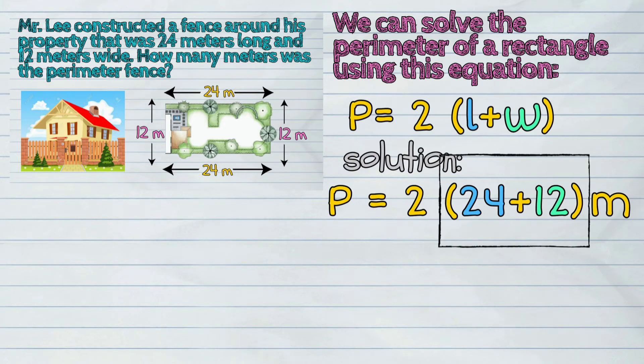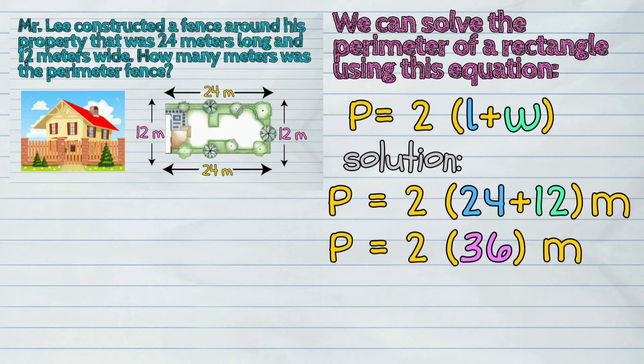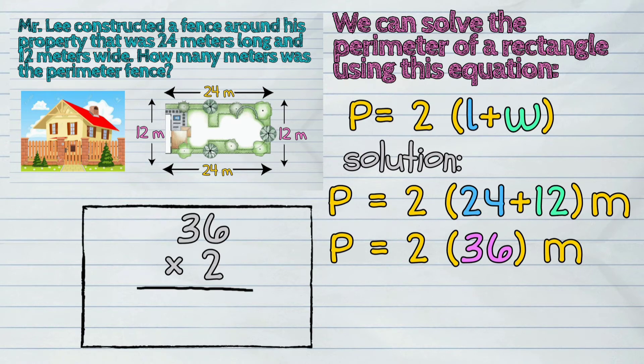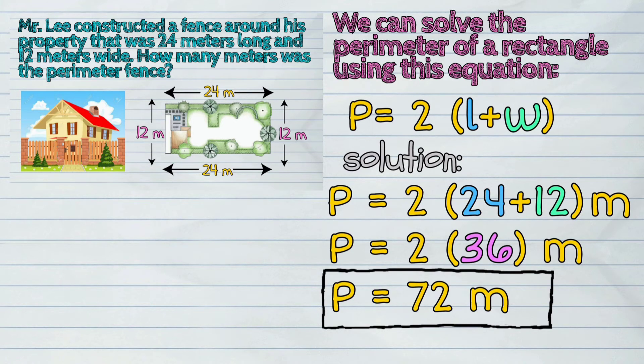Let us start with 24 plus 12. This equals 36. Now, let us multiply 36 by 2. 36 times 2 is 72. 72 is our final answer.